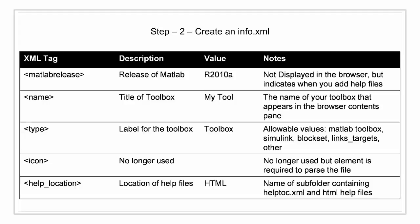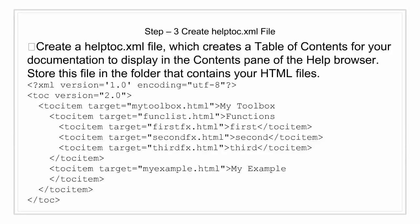The help_location tag specifies the location of all your HTML files and is the name of the subfolder that will contain the helptoc.xml file. The third step is to create a helptoc.xml file. This file creates a table of contents for your documentation to be displayed in the contents pane of the help browser. You store this file along with your HTML files in the designated subfolder.